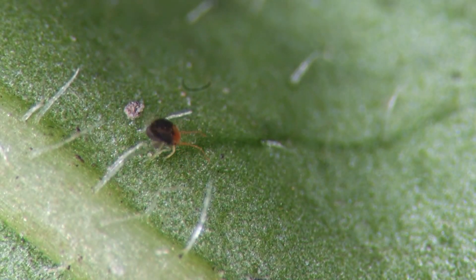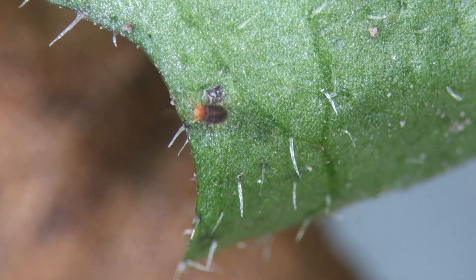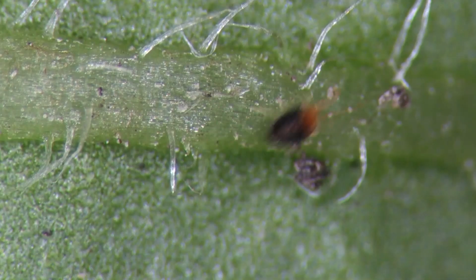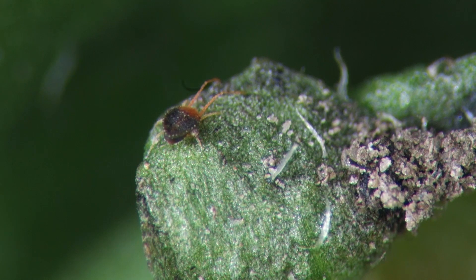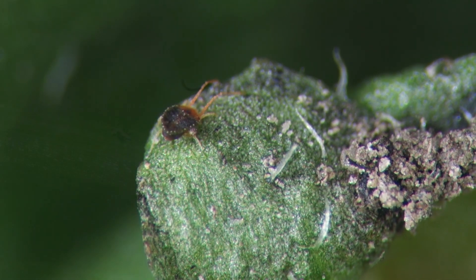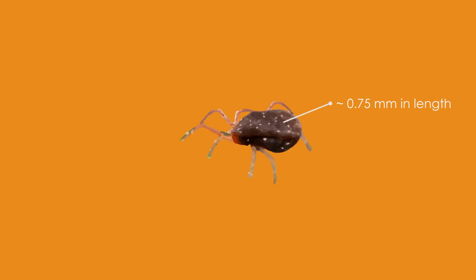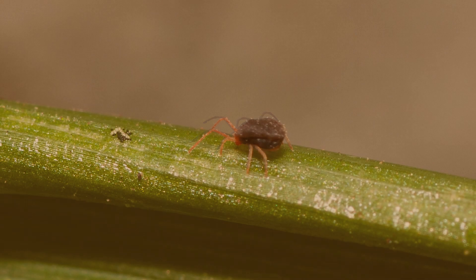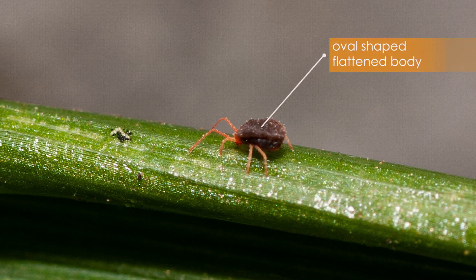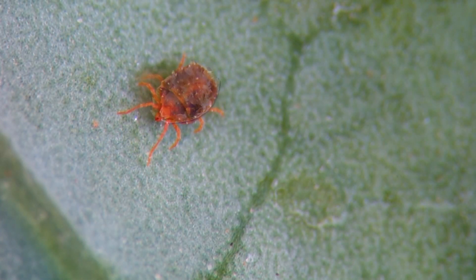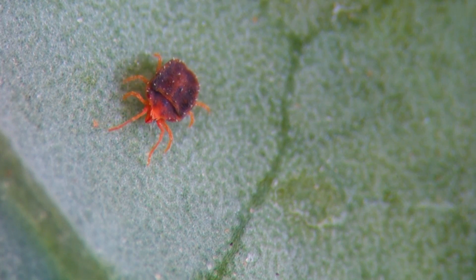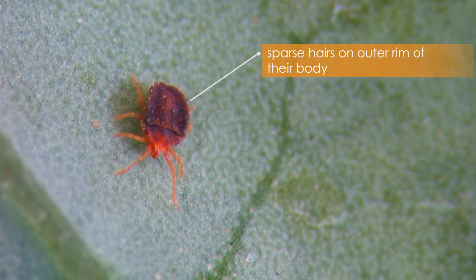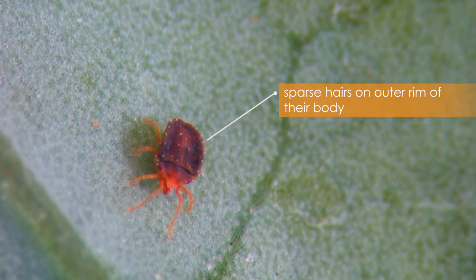Brobia mites are sometimes known as clover mites or pasture mites, and there are at least seven species found in Australian broadacre crops and pastures. Brobia mites are smaller than the red-legged earth mite, blue oat mites and the balustia mite, growing no more than 0.75 millimetres in length. Adults have eight pale red-orange legs and the front pair of legs are distinctively longer than the rest. Brobia mites have an oval-shaped, flattened body that is dark grey, pale orange or olive in colour. Their bodies look squashed and they often resemble little pies. Brobia mites are not very hairy — most of their sparsely distributed short hairs are located towards the outer rim of their bodies.